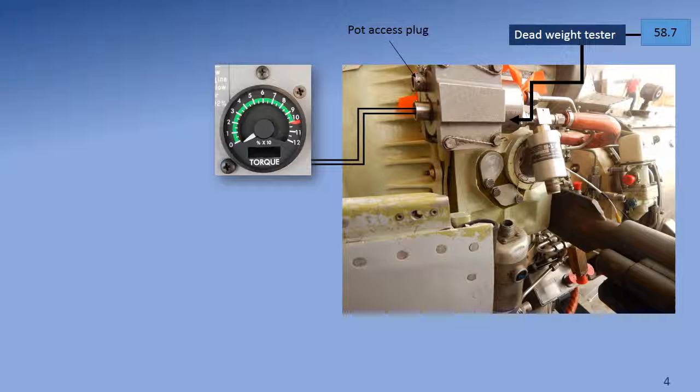Note that we've got a deadweight tester connected to the transducer and we're going to be feeding pressure into the transducer. We're going to turn the power on the aircraft and adjust the deadweight tester to the high pressure setting of 58.7 PSI and adjust the Z pot in the transducer until the cockpit indicator reads 100%.